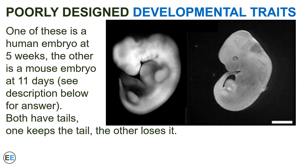Another example comes from early development in humans. One image is a human embryo at five weeks, and the other is a mouse embryo at 11 days. Notice how both of these embryos appear to have a tail. The mouse will obviously develop that embryonic tail into a real tail, while the human will end up not developing the tail at all. Both have tails — one keeps it, the other loses it — and it is not immediately obvious from the picture which is which. Why does the human embryo begin to develop a tail? It's a leftover trait from an ancestor that did develop a tail.